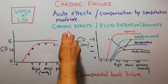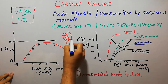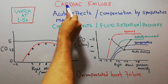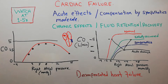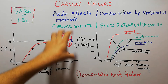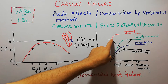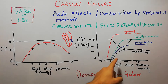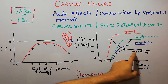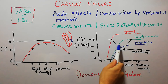What happens when the heart muscles are acutely damaged — for example, when a part of the heart muscle has been damaged due to obstruction of a coronary vessel? The heart functioning will decrease because that portion is unable to pump properly. So the cardiac output will quickly decrease, as denoted by the black color graph representing acute damage. After the acute damage the cardiac output has decreased.